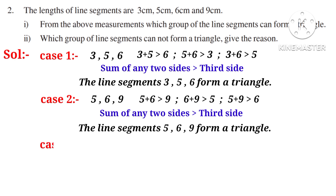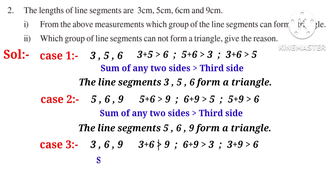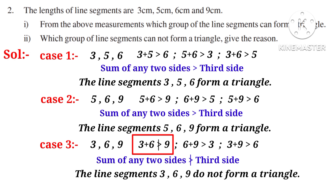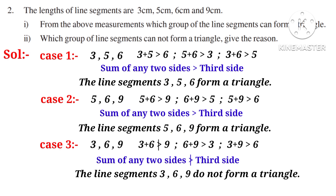Case 3: take 3, 6, and 9. Observe that 3 plus 6 is not greater than 9, though 6 plus 9 is greater than 3 and 3 plus 9 is greater than 6. So the sum of any two sides is not always greater than the third side because 3 plus 6 is not greater than 9. Therefore the line segments 3, 6, 9 do not form a triangle. In summary, 3,5,6 and 5,6,9 can form a triangle, but 3,6,9 cannot.